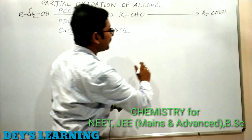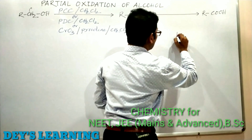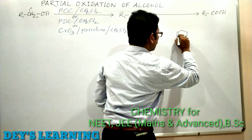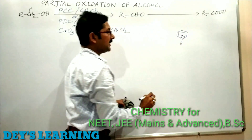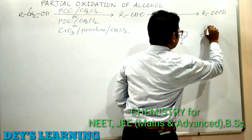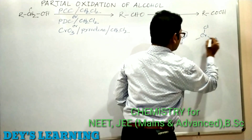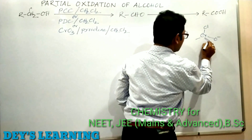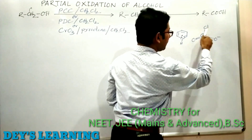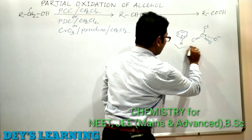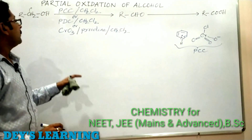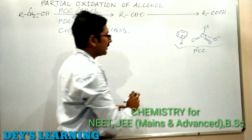The first one is PCC — pyridinium chlorochromate. This consists of a pyridinium ion and chlorochromate: Cl then double bond O, then double bond O — chromium has six electrons. This is known as PCC, pyridinium chlorochromate, and this reagent is known as Corey's reagent.